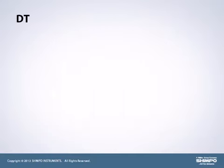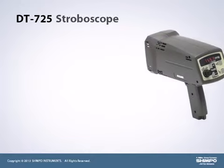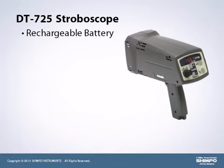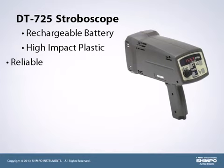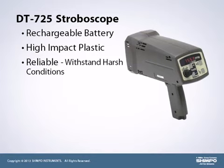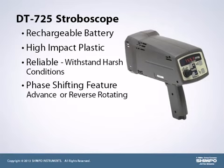The DT-725 portable, lightweight stroboscopes with rechargeable battery are constructed of strengthened high-impact plastic. These rugged units are exceptionally reliable and withstand the harsh conditions in demanding plant environments. Employing its phase shifting feature, the DT-725 can advance or reverse rotating or reciprocating machinery such as covered gear teeth, shafts, oil, fuel, and ink injection patterns, and print media for visual inspection, all without stopping production.